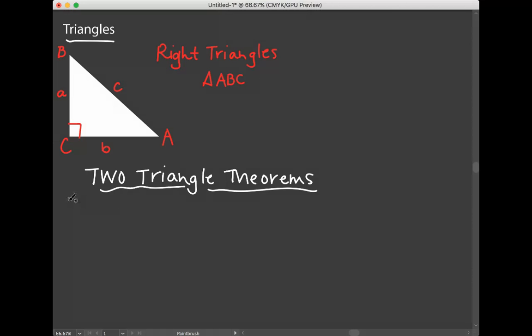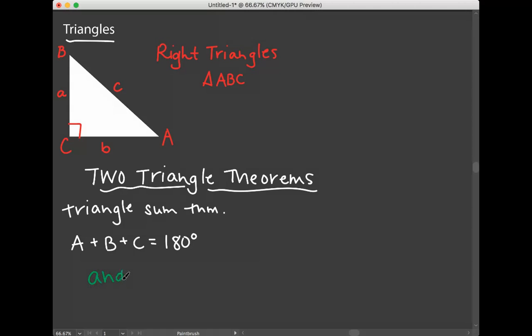The first thing that we're going to review, we're not going to prove it, is the triangle sum theorem. And all the triangle sum theorem says is that the angles in a triangle add up to 180. So the measure of angle A plus the measure of angle B plus the measure of angle C equals 180 degrees. So this triangle sum theorem tells us a lot of information about the angles of a triangle.